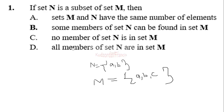Now let us see whether any of these will hold true. Set M and N have the same number of elements — that is not true, because N has two elements and M has three elements. Some members of set N can be found in set M — a and b are in set N and some of them are found in M. But it is not just some; if we say some of them are found here, it means there is an element in set N that is not in M. But when that happens, then N is not a subset of M. So this one too is not true.